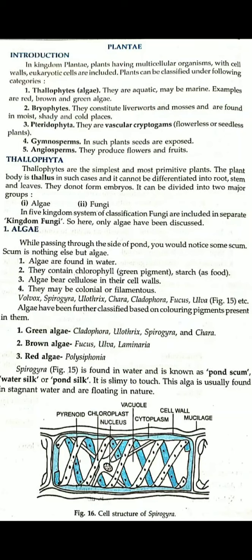In the five kingdoms classification, algae is one group. The algae can be scum — for example, you can see it as pond scum. Algae contain chlorophyll, a green pigment, and store starch as food. Algae also have cellulose and may be colonial or filamentous. For example: Volvox, Spirogyra, Ulothrix, etc.